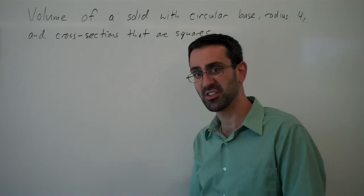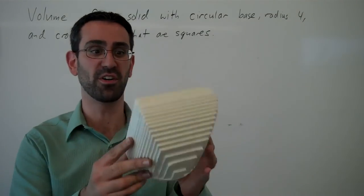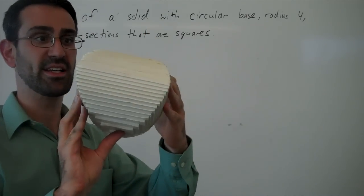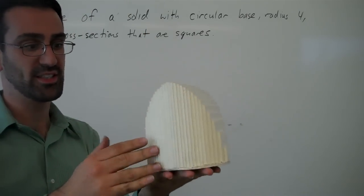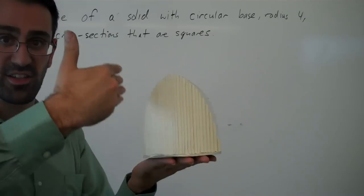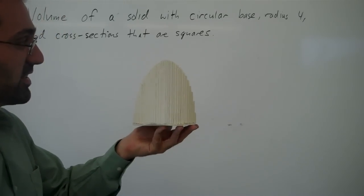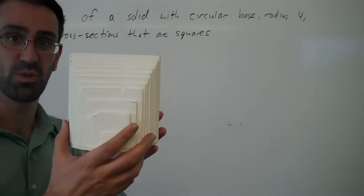In case you're having a hard time thinking about that, I brought a model. So here we have the circular base. And what we're imagining is that if we slice this perpendicular to that base, each of those cross-sections will be a square.